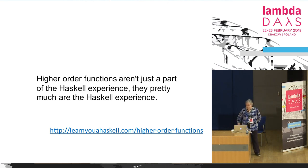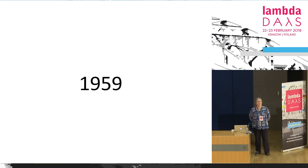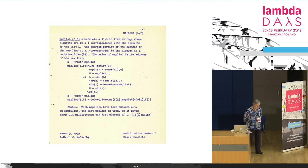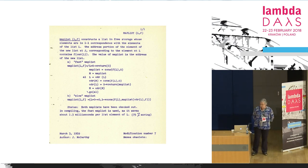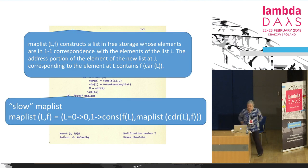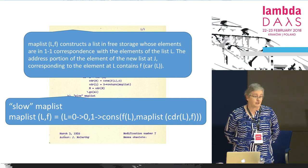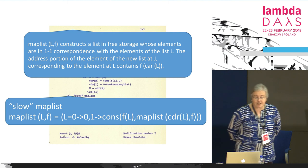I'm going to start with some history, going back to 1959. I thought if I'm going to talk about map, fold, and scan, I'd better find out who invented them. So I went back and read some papers, and I found this page of the Lisp Manual from March 3rd, 1959, which contains a definition of a function called 'map list.' On the top there's documentation, and on the bottom there are two different implementations of map list.